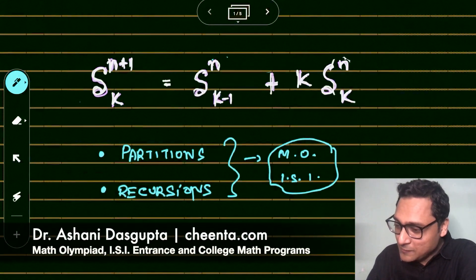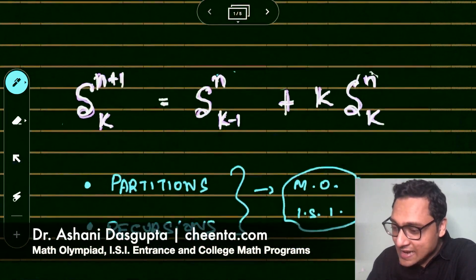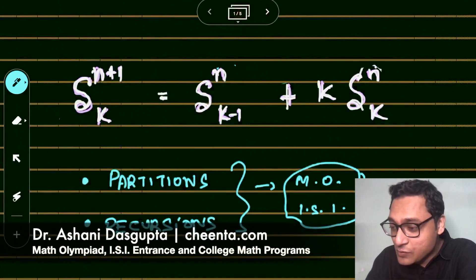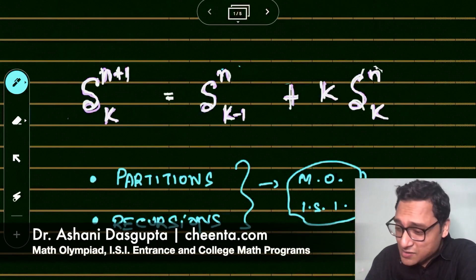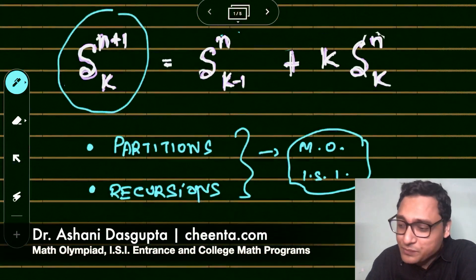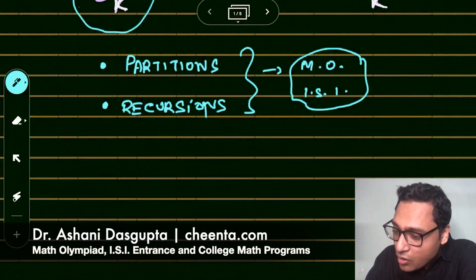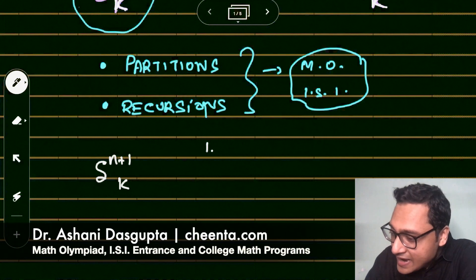So what is this problem all about? It is: S(n+1, k) = S(n, k-1) + k × S(n, k). What do these symbols even mean? S(n+1, k) — it's quite simple. You have n+1 objects, let's call them n+1 different numbers, and then you have k bags.